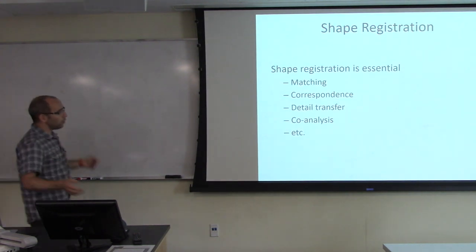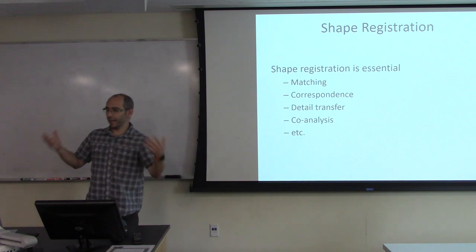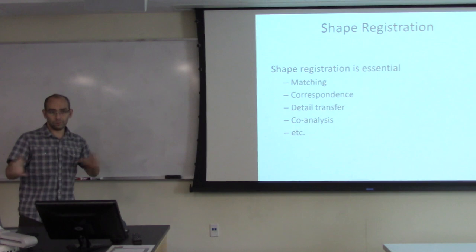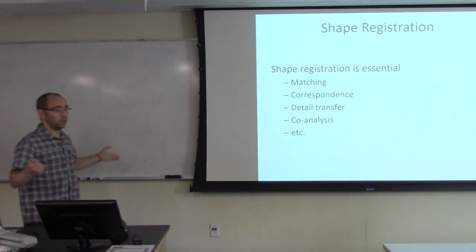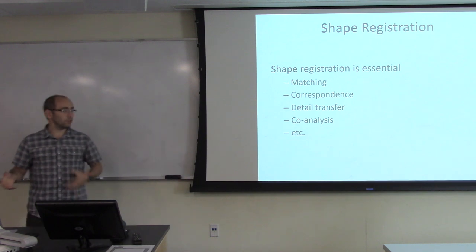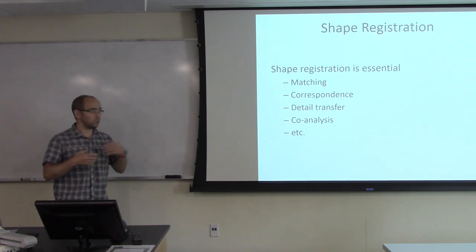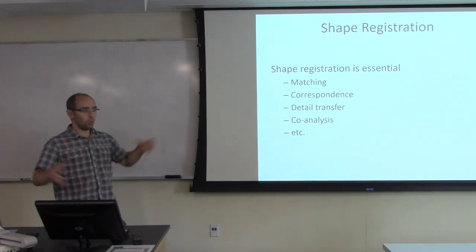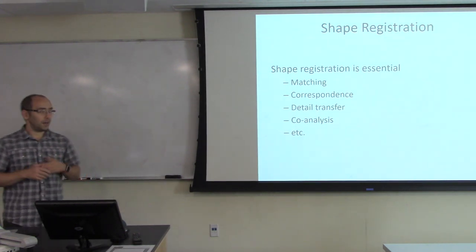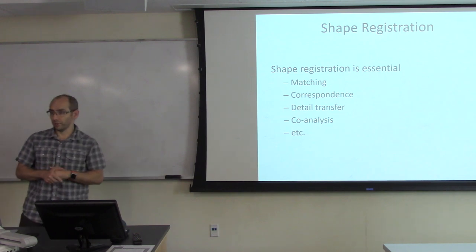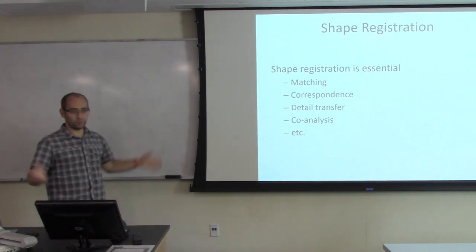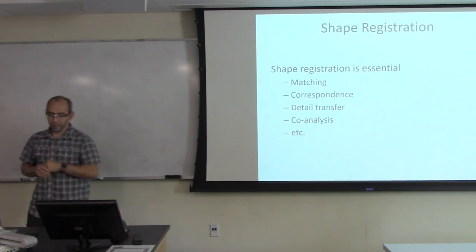You have shapes, and the natural thing to do with similar shapes is to register them — establish some mapping or correspondence between them. You use this for shape matching to say they're similar, but also for more complicated tasks: establishing correspondence, transferring information, working on collections of datasets for consistent segmentation. All of these require establishing a registration. In this case, I'm not looking specifically at rigid registration, just some sort of registration.